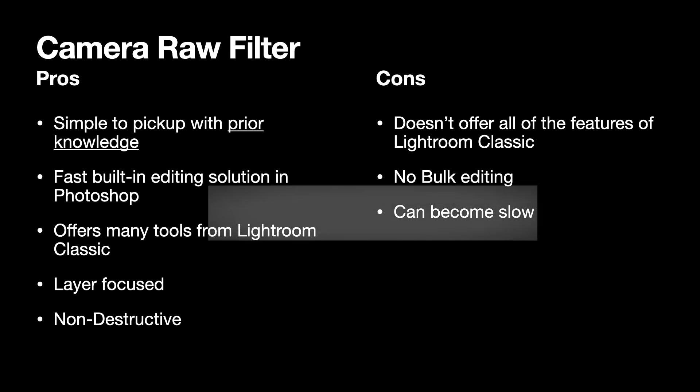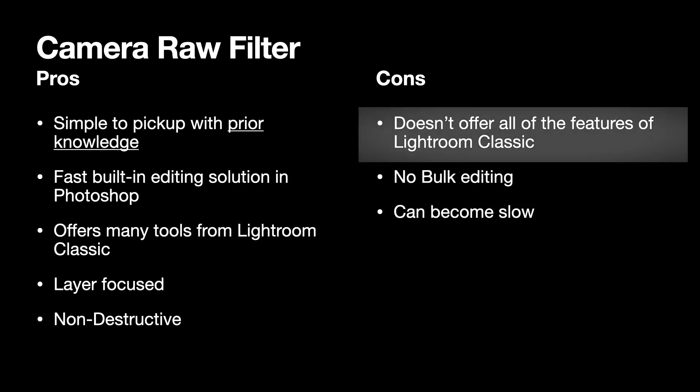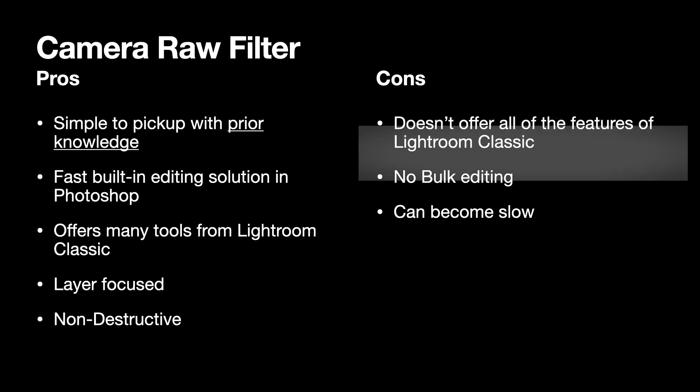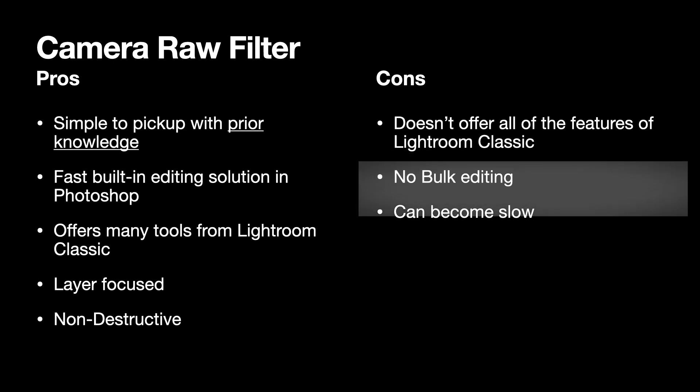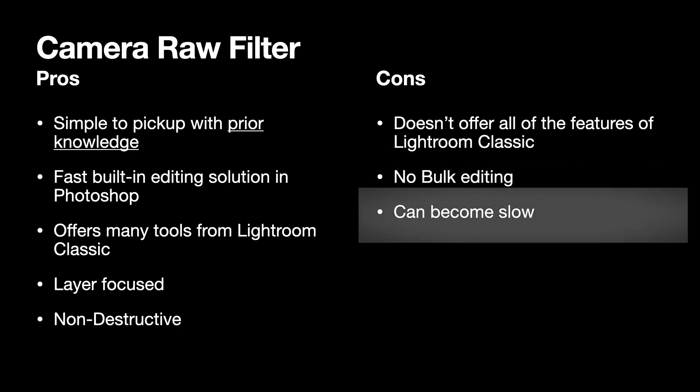The cons: it doesn't offer all the features of Lightroom Classic, which is a bummer, because then you do have to go into Lightroom Classic using Adobe Dynamic Link and actually edit your photo there. There is no bulk editing in Camera Raw Filter — you can't select multiple layers or multiple photos, so you can only use that one layer. And it can become slow sometimes due to Photoshop's nature of slowing down with multiple filters, layers, and background tasks.